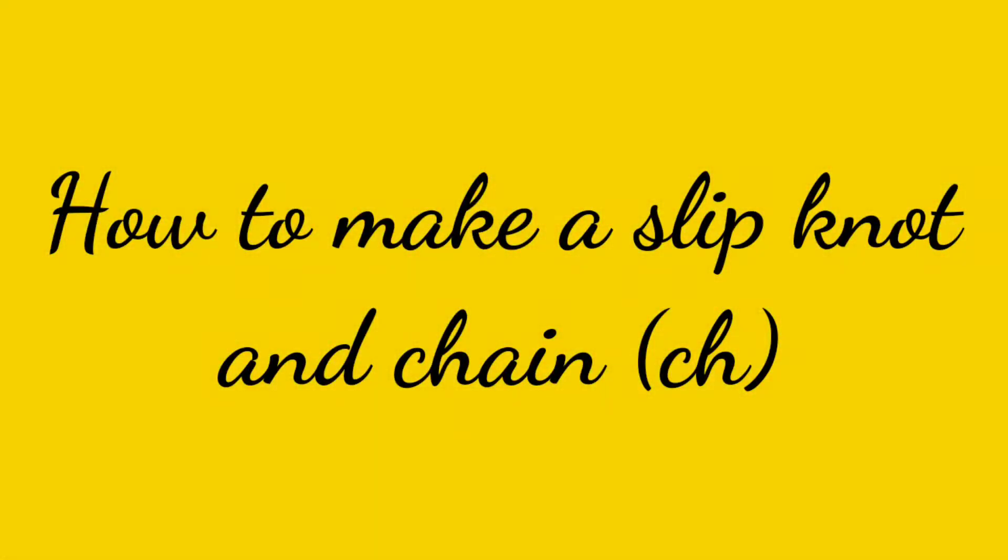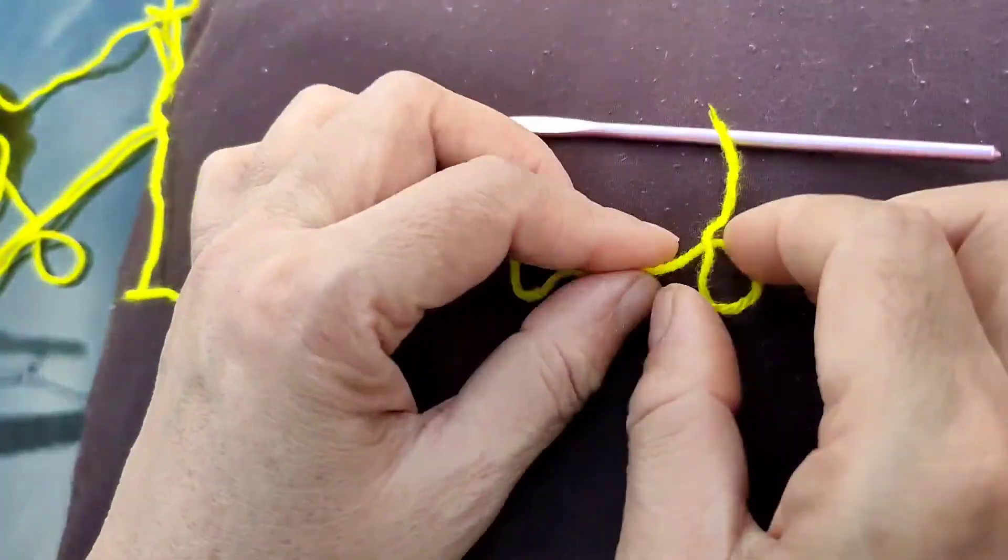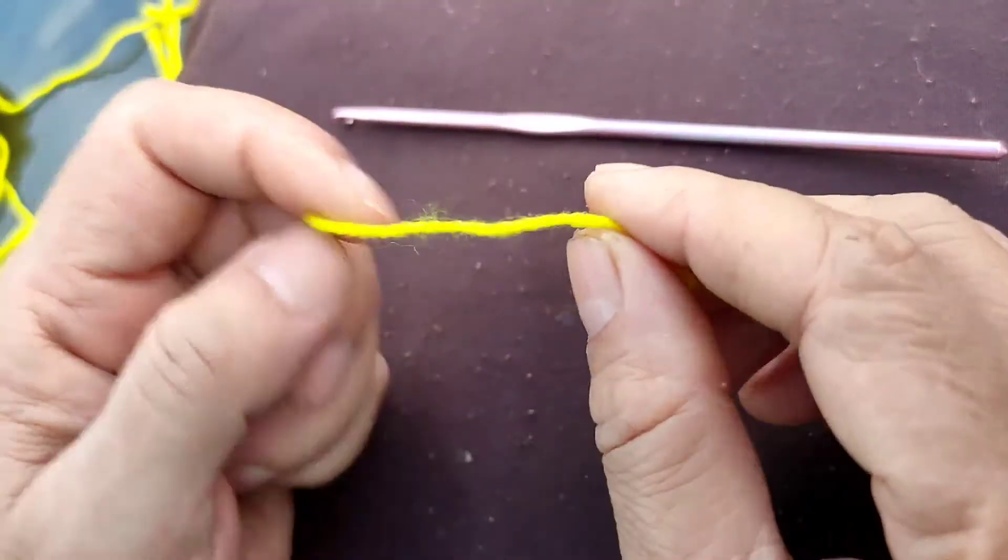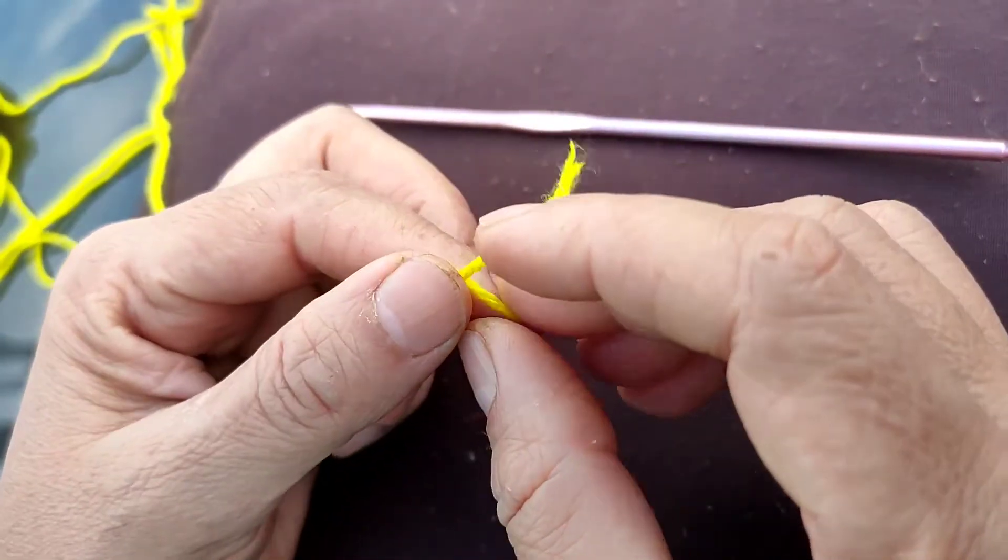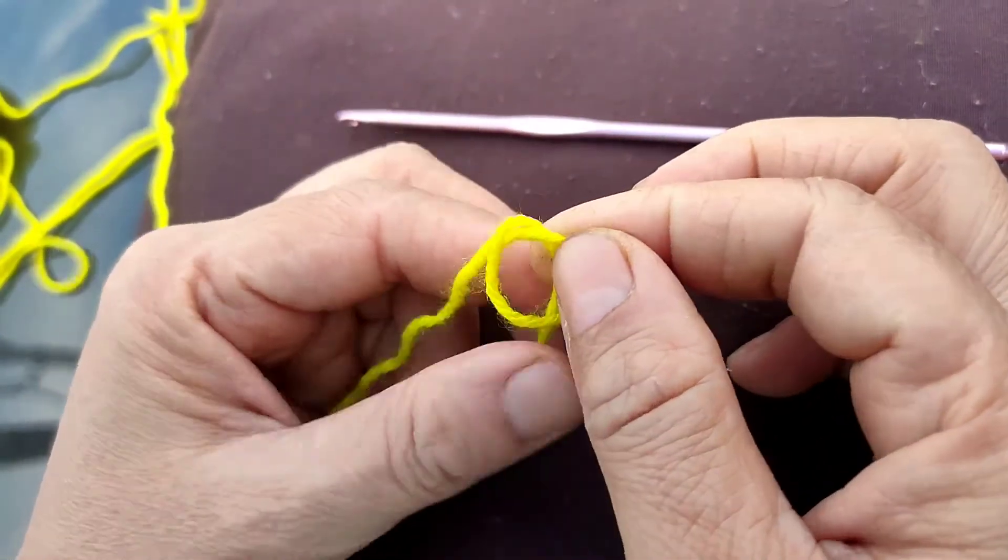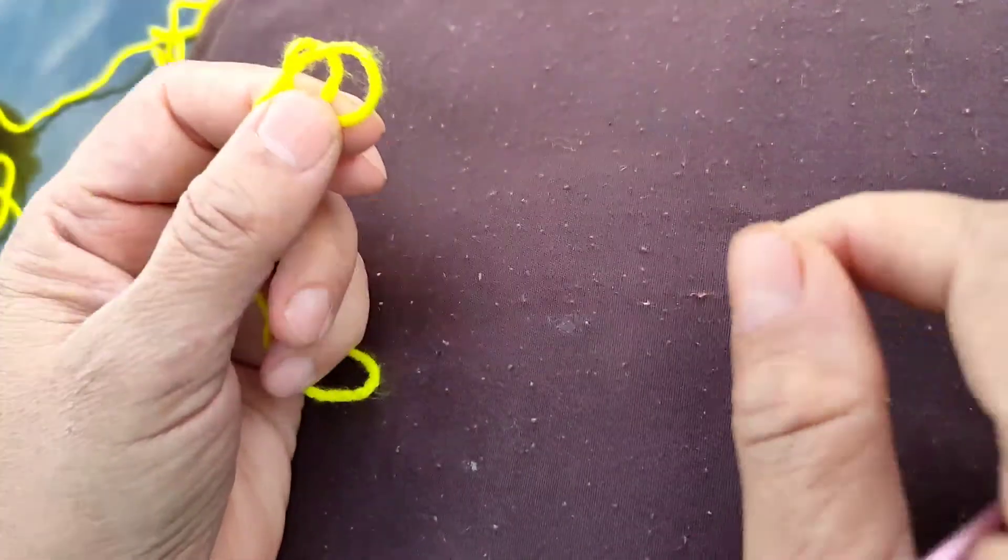Hello everyone, now here we will start learning how to make a slip knot. To make a slip knot, first of all wrap the yarn around your finger and now make a loop. Hold the tail of the yarn.